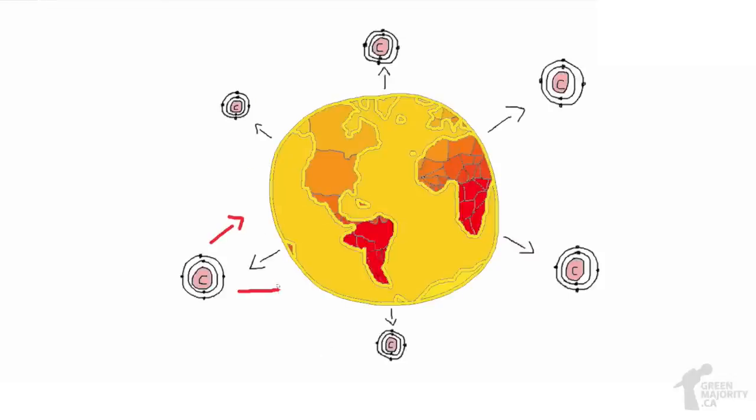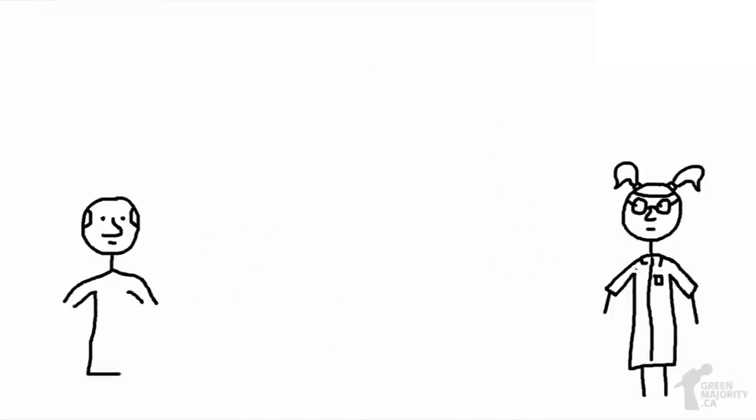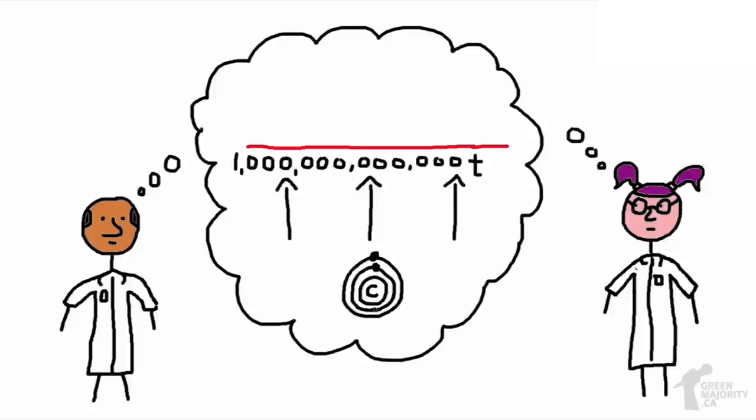Increased carbon in the atmosphere warms the planet. Scientists estimate that humans cannot add more than one trillion tons, also known as 1,000 gigatons, of carbon to the atmosphere to stay below 2 degrees of global warming.